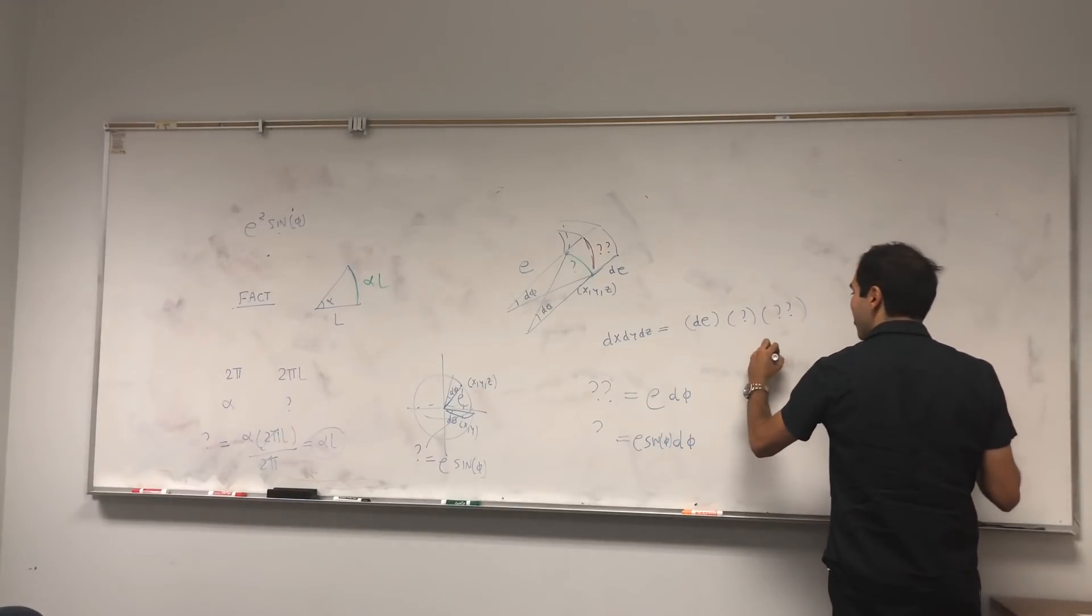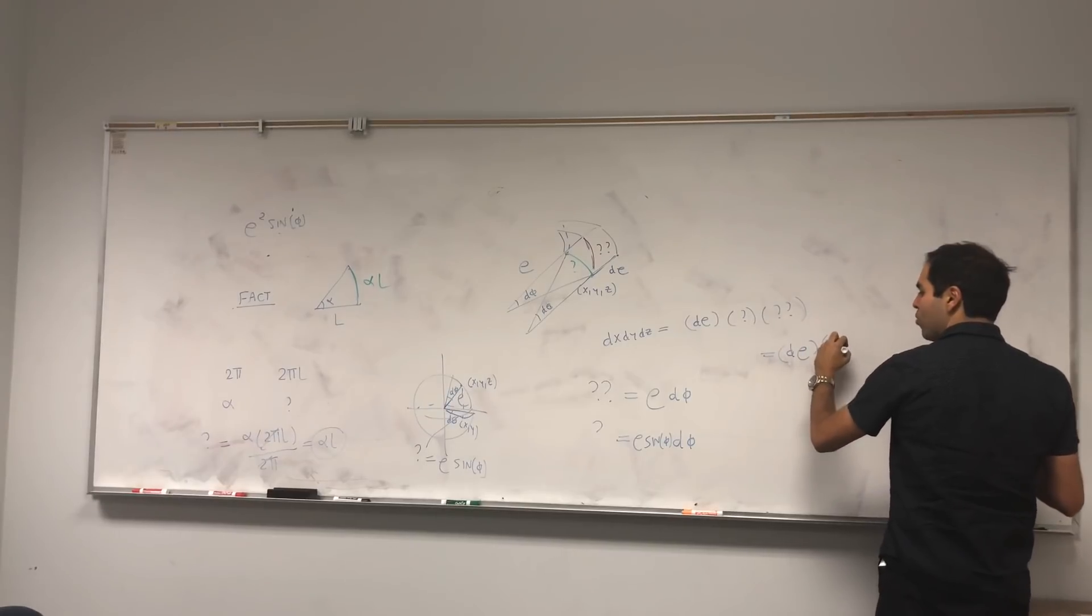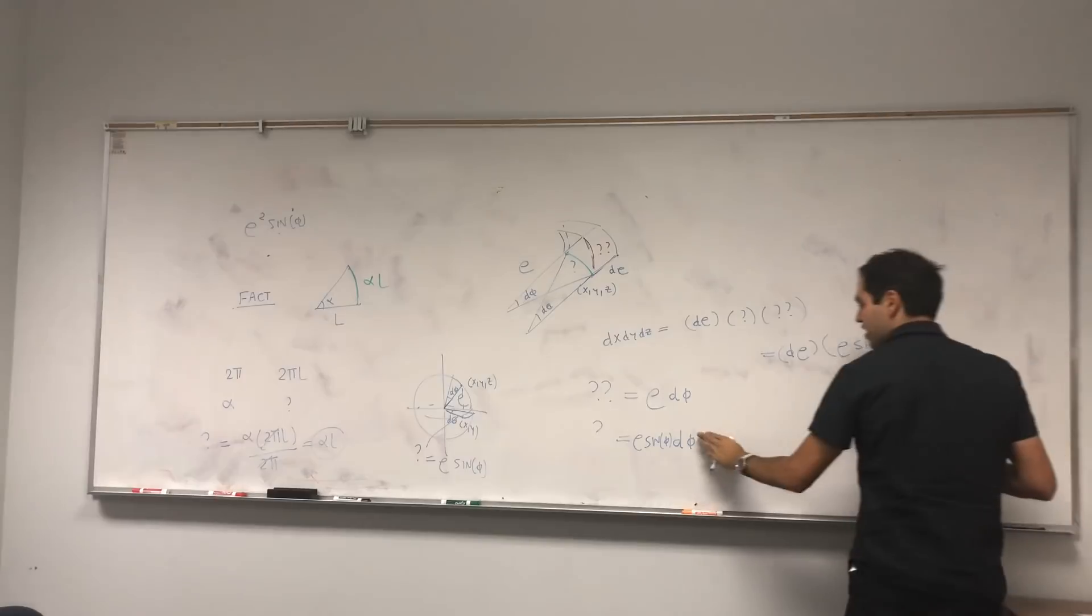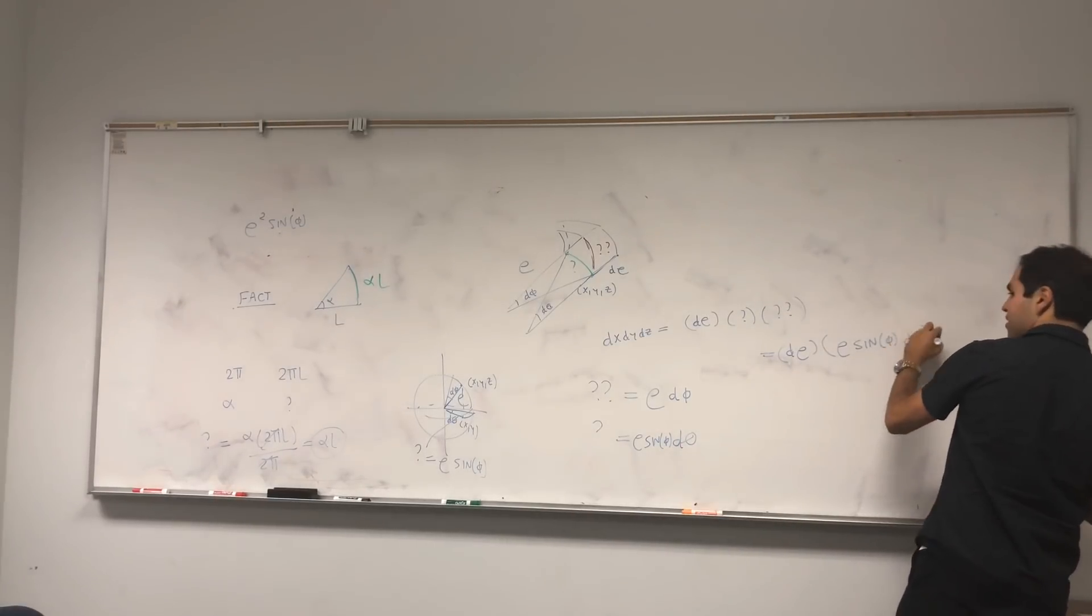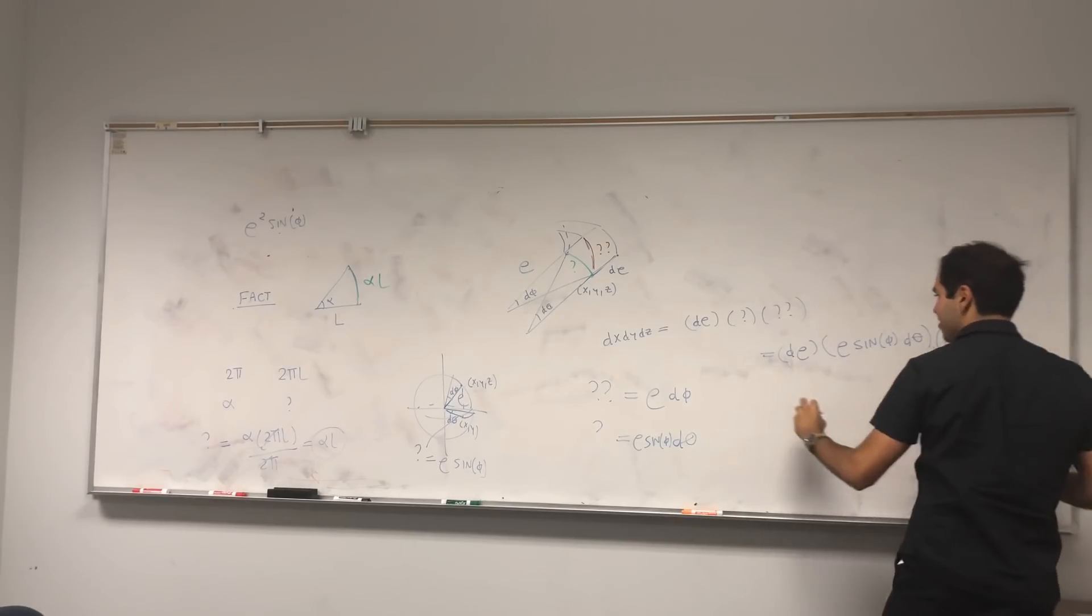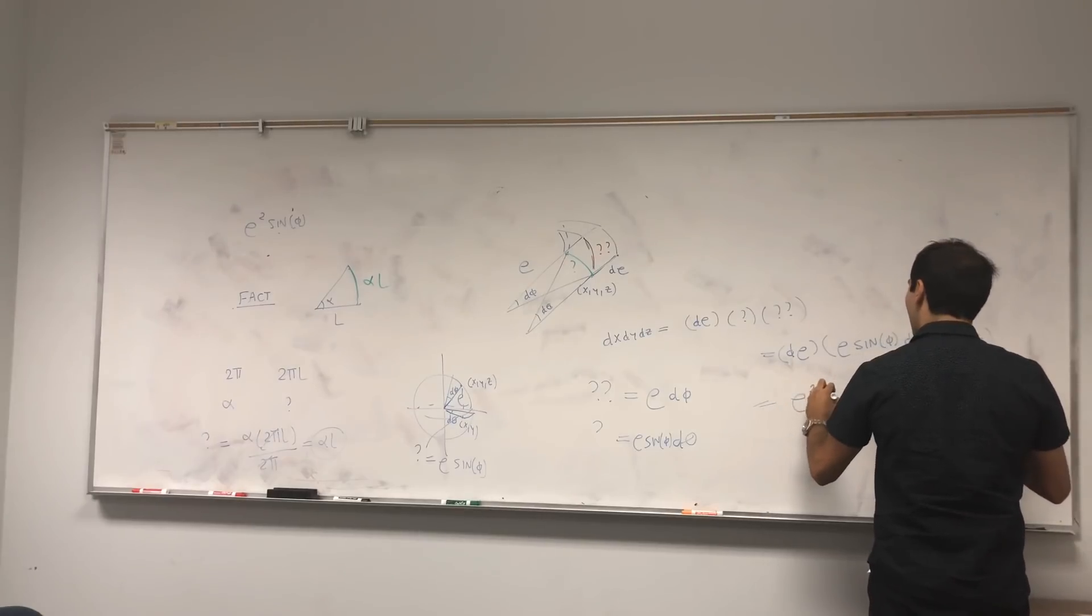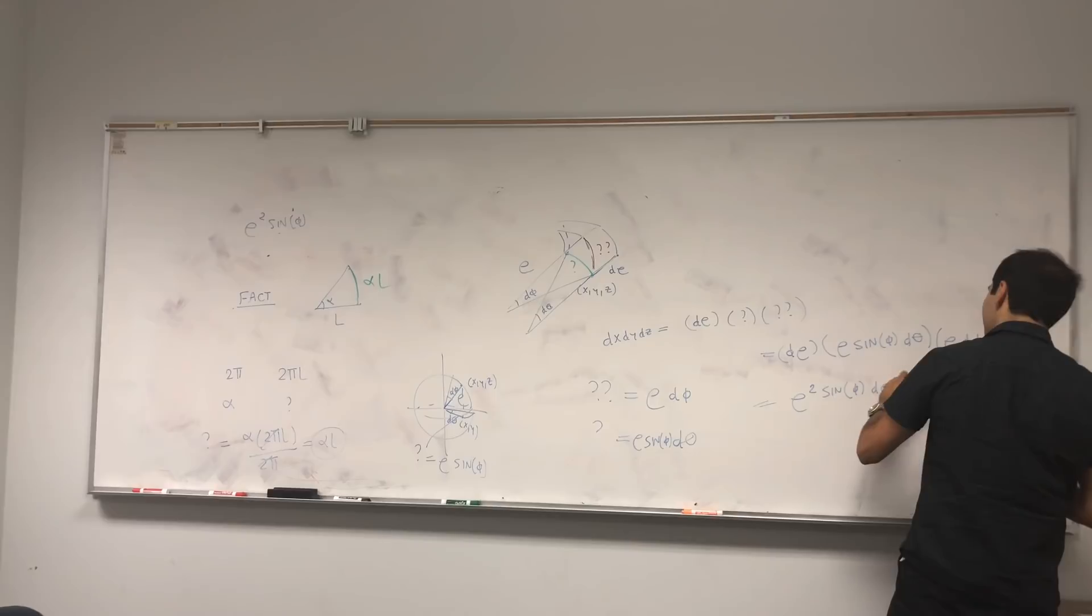And lastly, you just have to multiply both of them together, so we get d rho, rho sine of phi d theta, and lastly, rho d phi. And if you multiply all those together, we indeed get rho squared sine of phi, d rho, d theta, d phi.